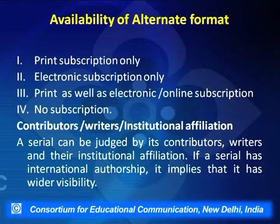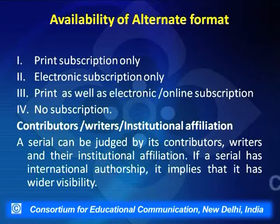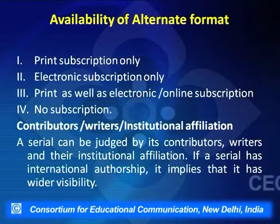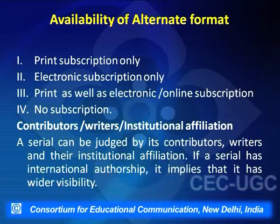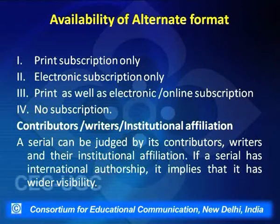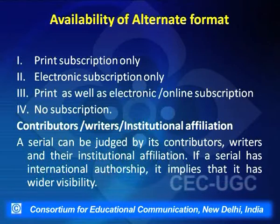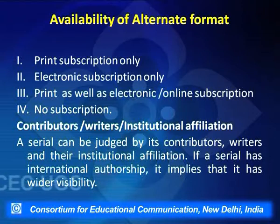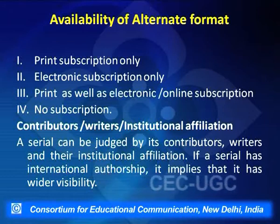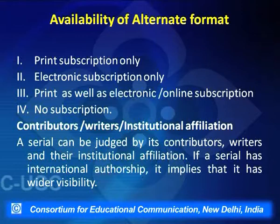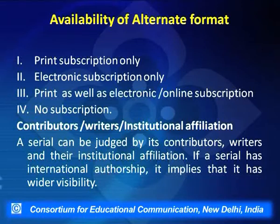A third option is no subscription — certain journals are available in open access, so the library need not pay for them. Another criterion is contributors, writers, and institutional affiliation. A serial can be judged by its contributors and their institutional affiliation. If a serial has international authorship, it implies wider visibility. If a journal has an international readership, it is being used across the globe — that is also one of the criteria used in selecting serials.